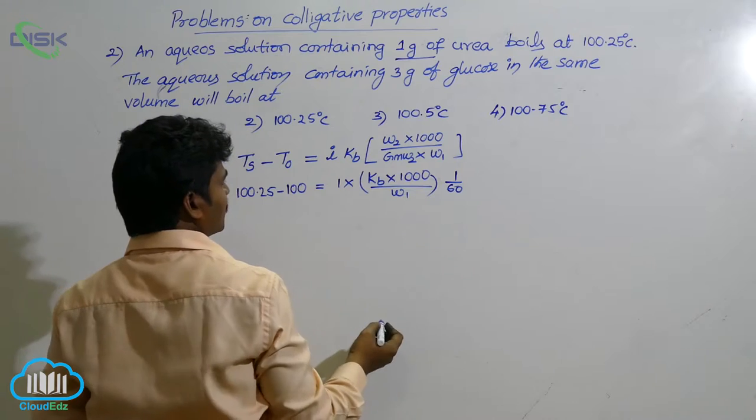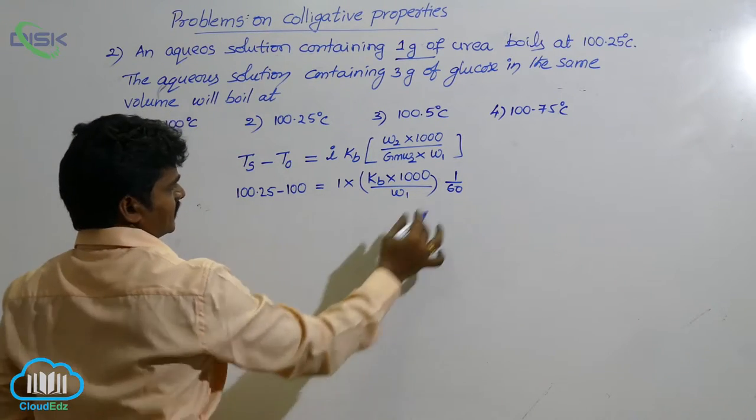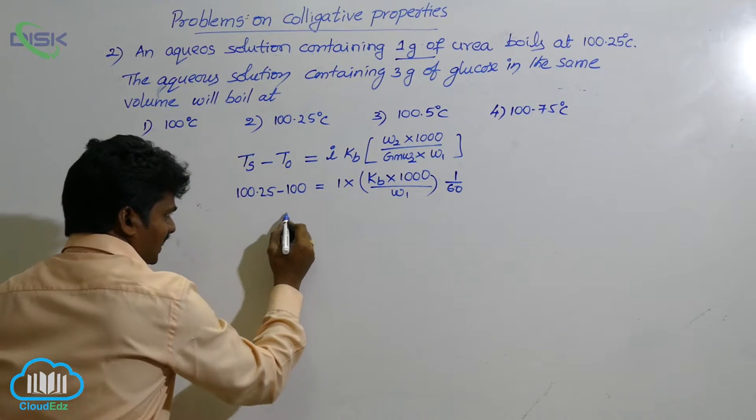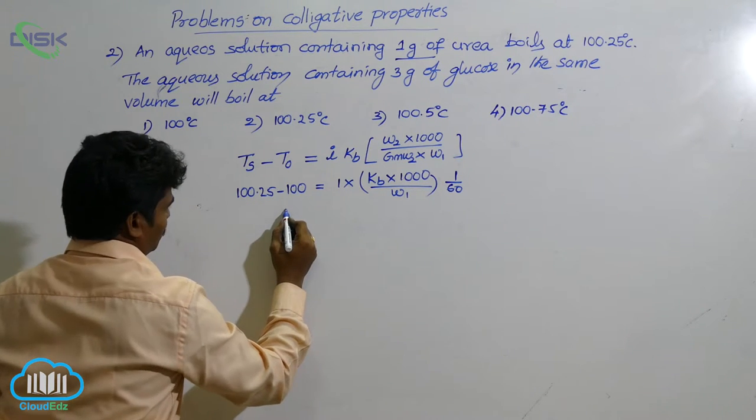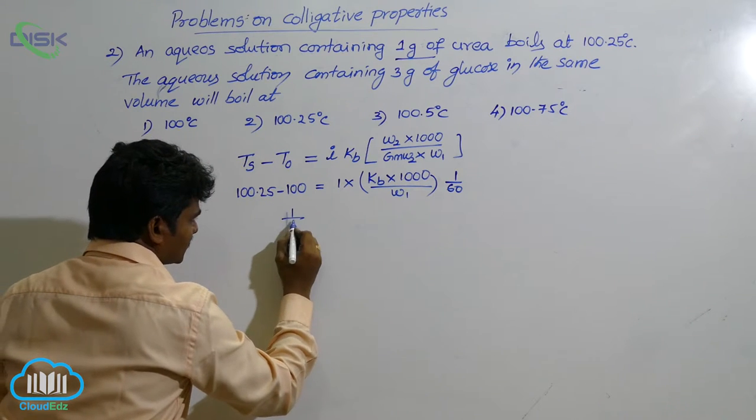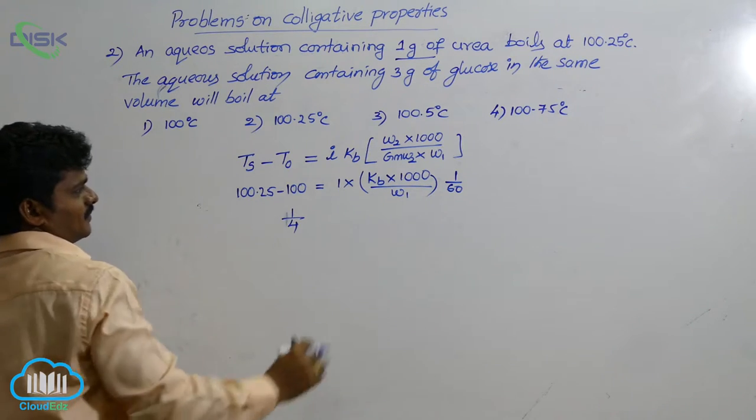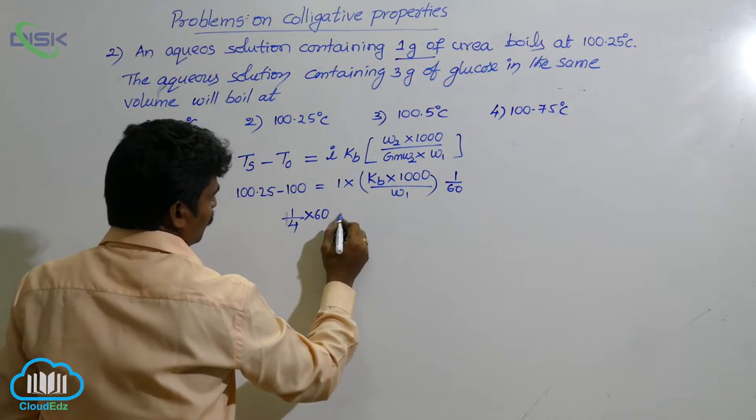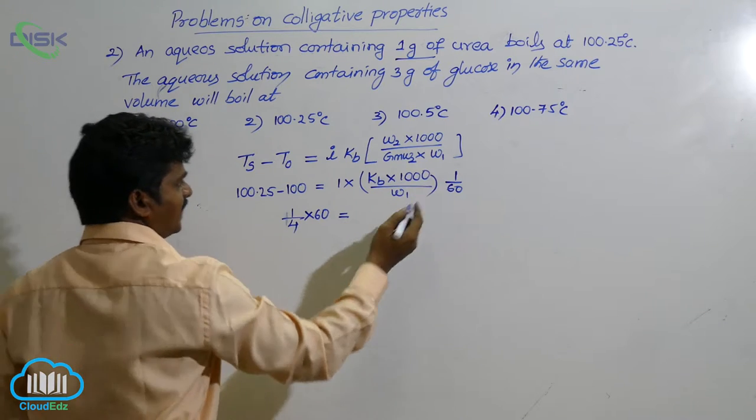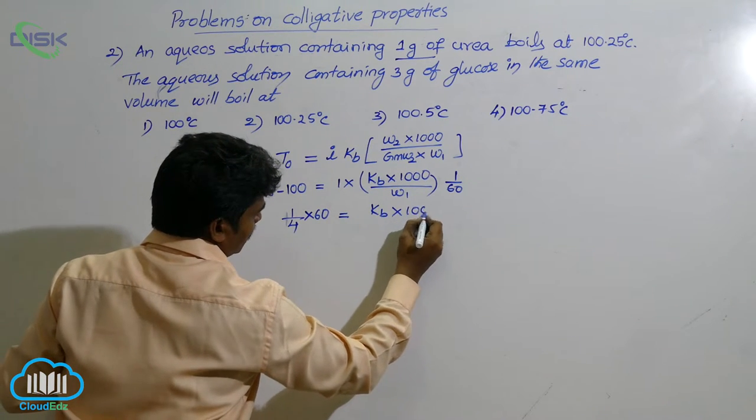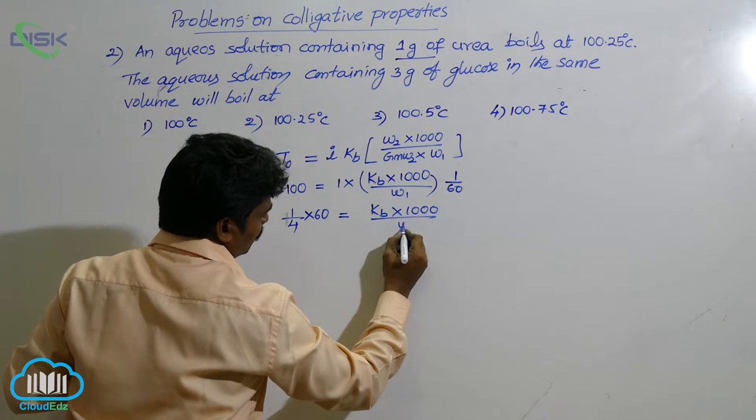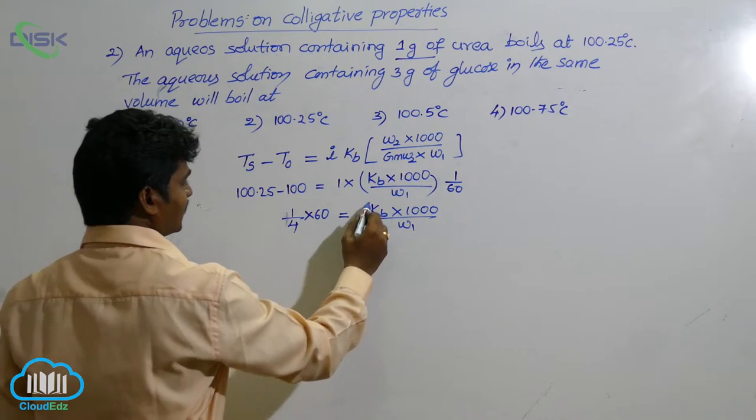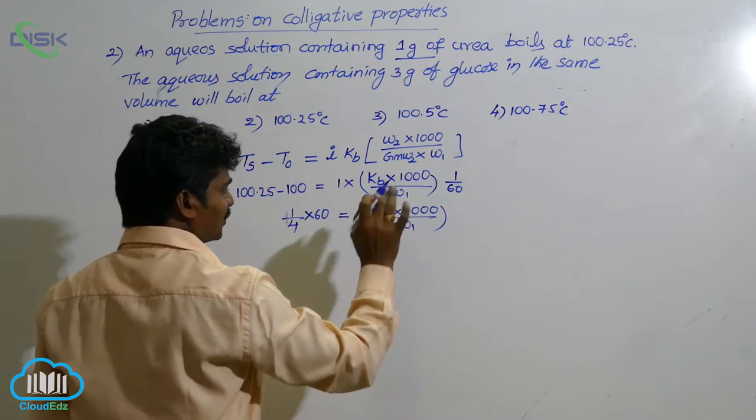Then which are left inside the square bracket? W2, this is weight of urea, 1 gram by gram molecular weight of urea 60. So here see 1 by 60, take this term to this side. Here 100.25 minus 100 means 0.25. This value 0.25 means 1 by 4. 60 comes this side, now times 60. What is left that side? KB into 1000 by W1, that is weight of solvent. So we got a value for KB into 1000 by W1.